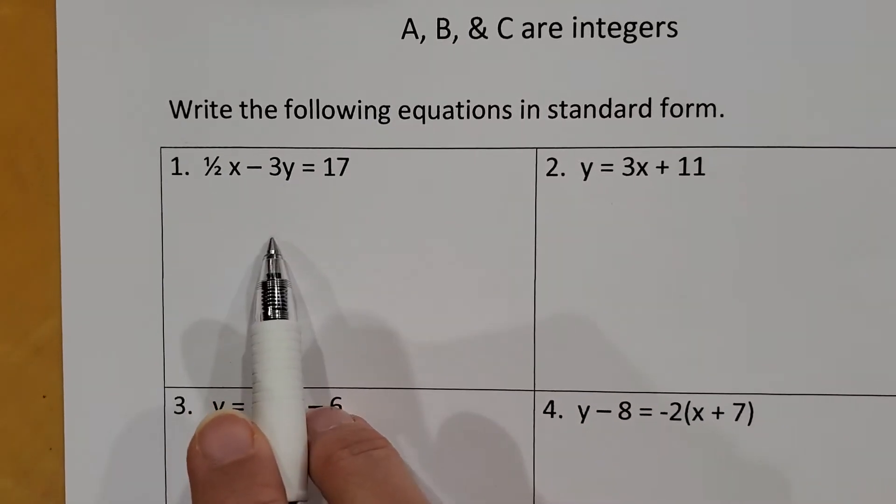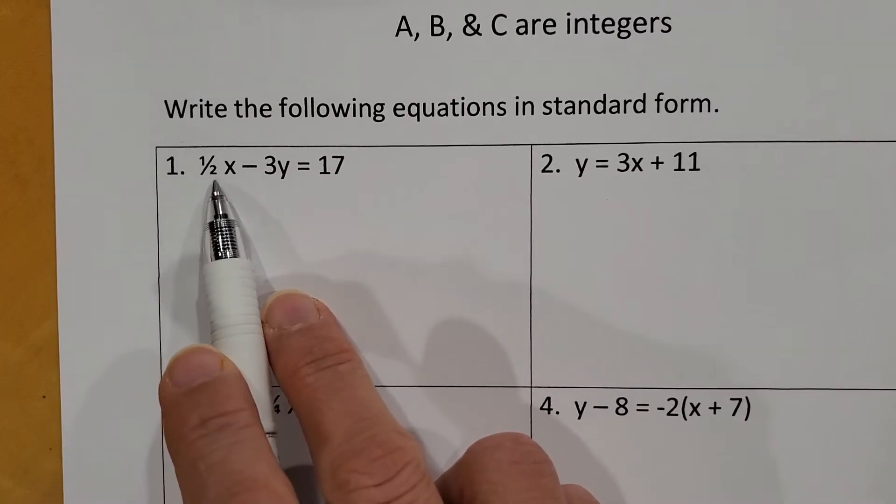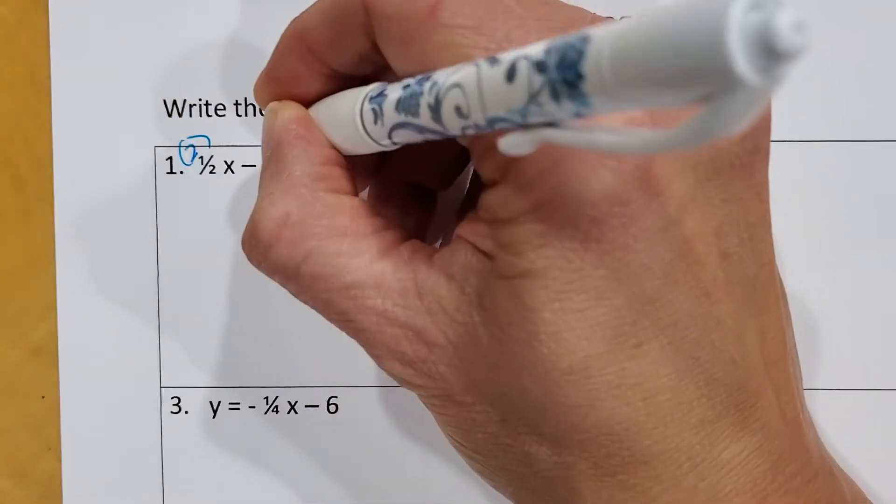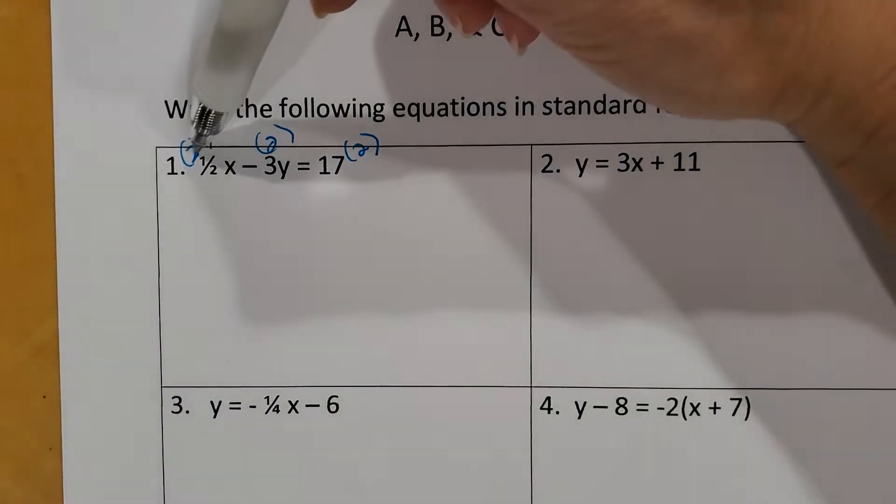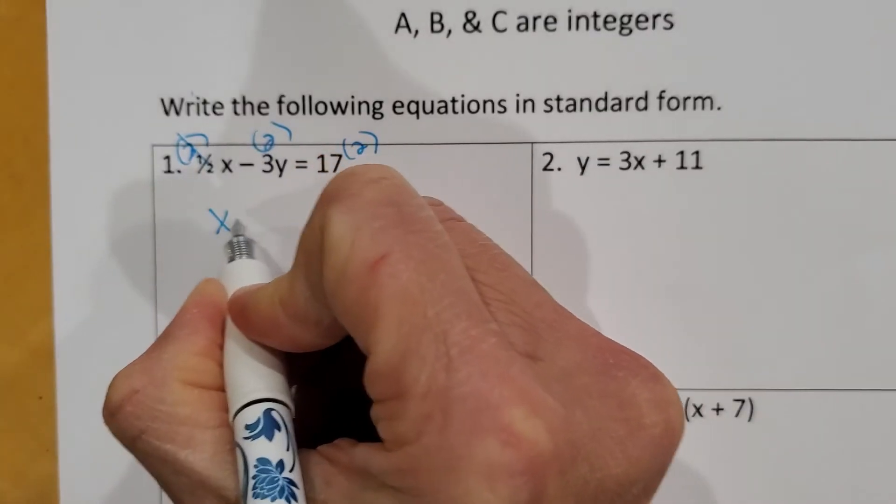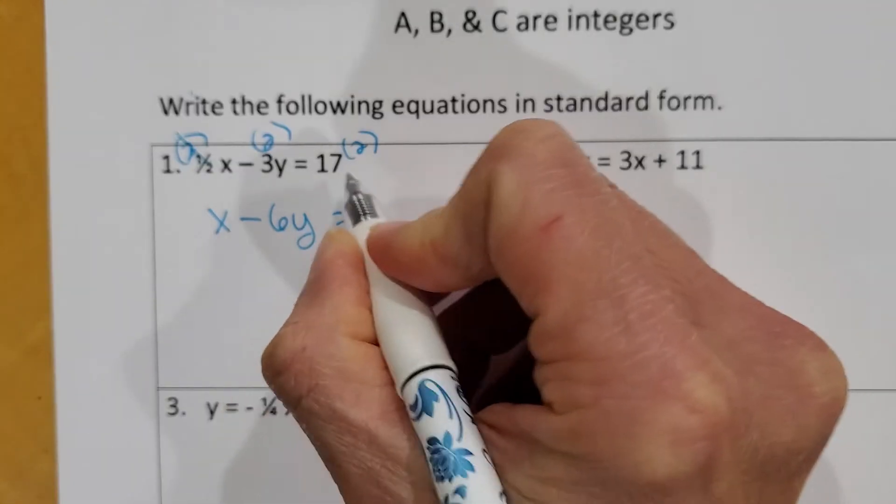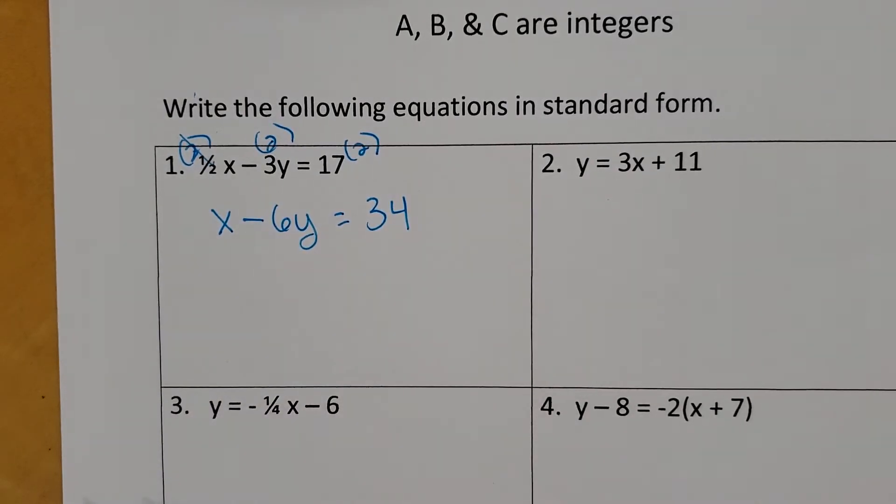So when I look at this problem right here, X and Y are on the left. Beautiful. The problem is it's not in standard form because A is a fraction, and I can't have A as a fraction. So to get rid of that fraction, I'm going to multiply everything by the common denominator, which is 2. So I'm going to multiply this by 2, this by 2, and this by 2. Well, 1 half times 2, the reason we did that was to cancel it out. So I get X minus 3Y times 2 is 6Y, and 17 times 2 is 34. Now, my equation is in standard form. X and Y are on the left, and no fractions or decimals.